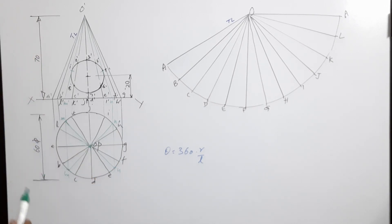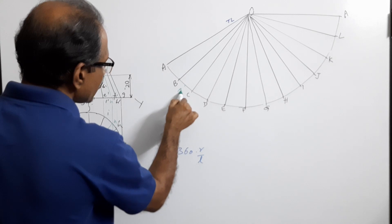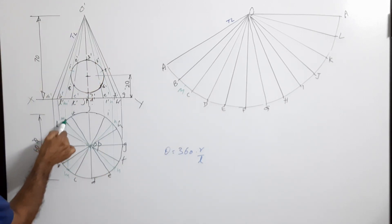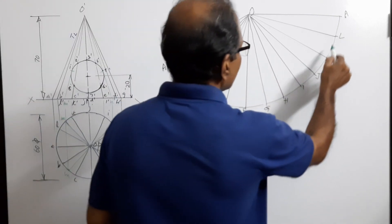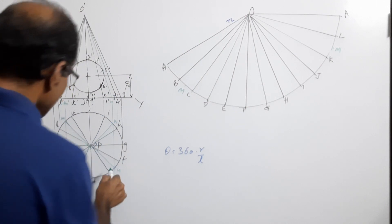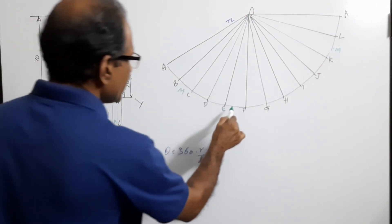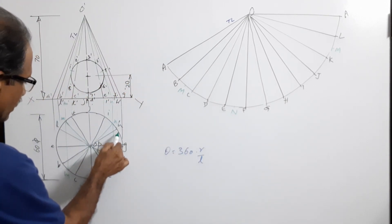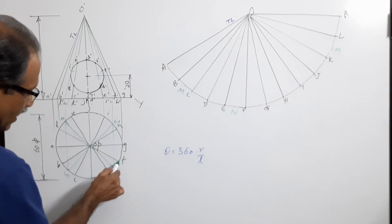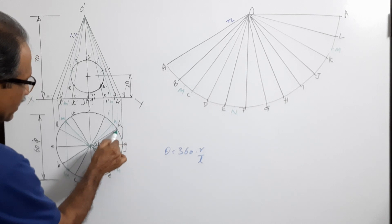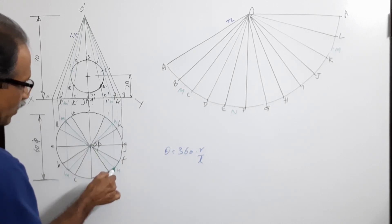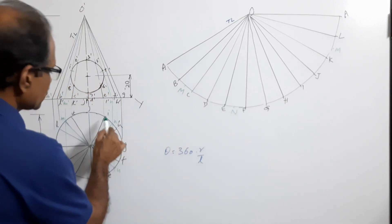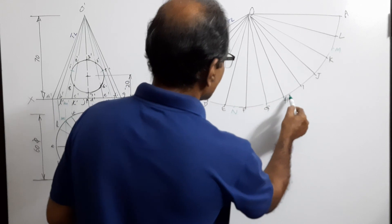M is on the way from b to c. Take distance bm and mark m on the development — bm and lm are the same, so lm is marked on the way from l to k. Similarly, n is on the way from e to f; mark fn, and by symmetry hn (h to i) has the same distance. Take f to n, mark it, then mark h to i the same distance.